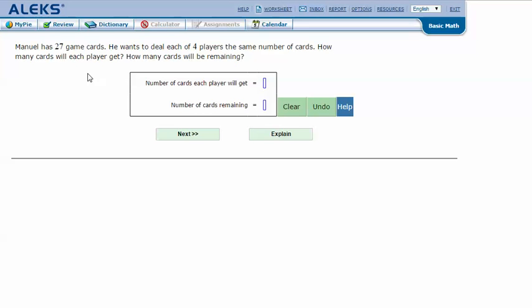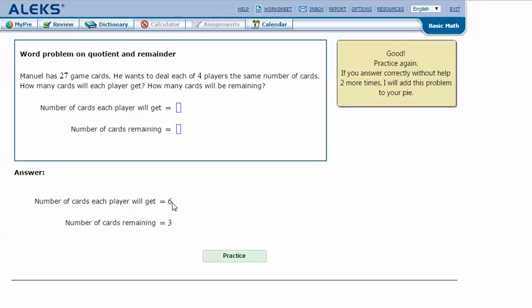In my ALEKS screen there are two parts to my answer. Number of cards each player will get is 6 and the number of cards remaining is 3. Click next and it says that I got the correct answer.